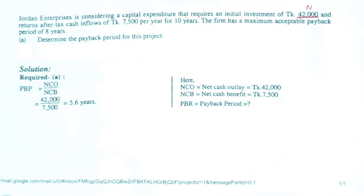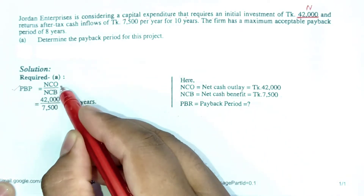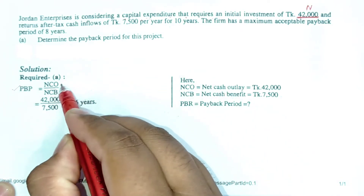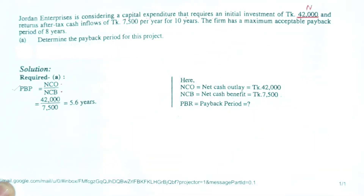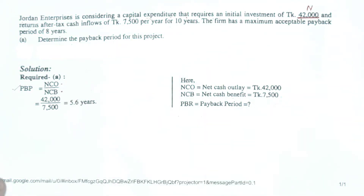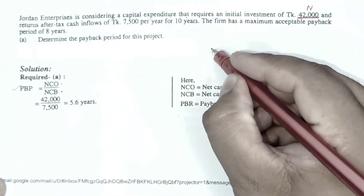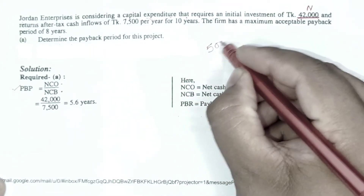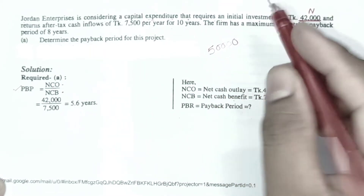The first formula for Payback Period is: PBP equals NCO divided by NCB. This formula is used when, for example, a project has a total investment of 5,000 taka with equal annual cash inflows.